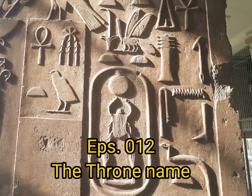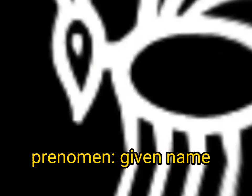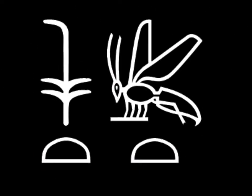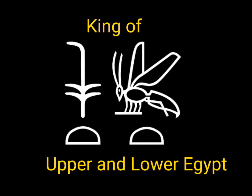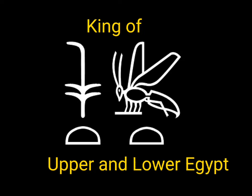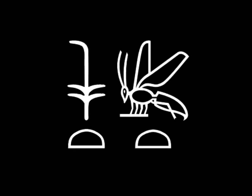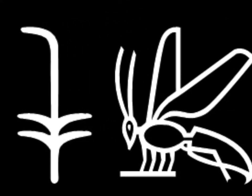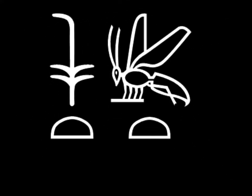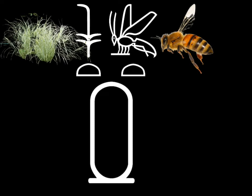The throne name, known also as the pre-nomen or King of Upper and Lower Egypt name, is represented by having the sech plant and the bee with the king's name inside the cartouche.